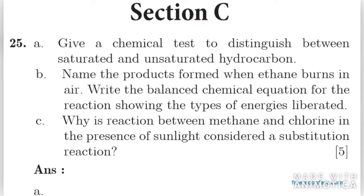The second question asks you to name the products formed when ethane burns in air and write the balanced chemical equation showing the types of energies liberated. When ethane (C2H6) reacts with oxygen, it forms carbon dioxide, water, heat, and light. These are the four end products. You then have to balance the chemical equation using the balancing method from chapter one.